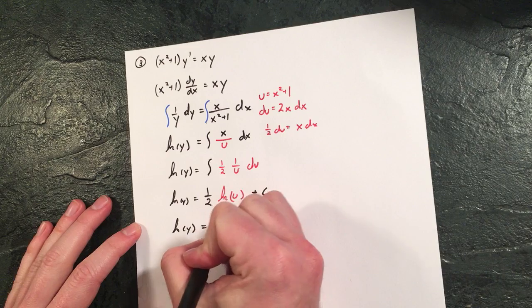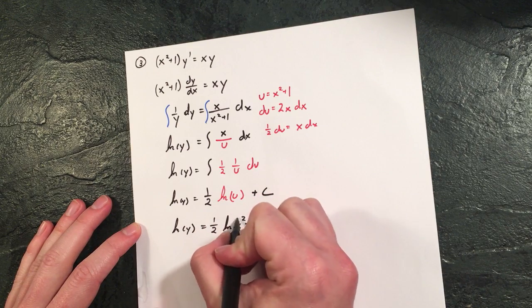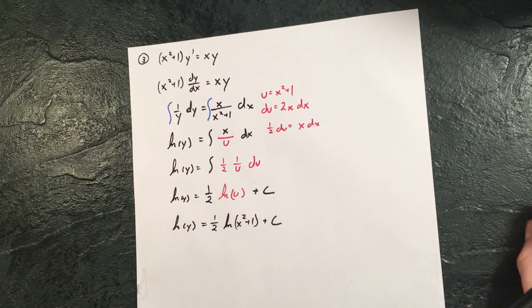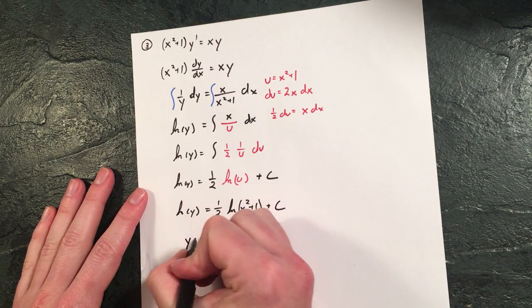ln of y equals one half ln of x squared plus one plus c. And if they're going through the process of saying solve for y, what that would look like is we have to e both sides.